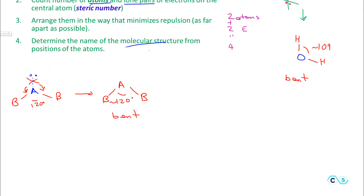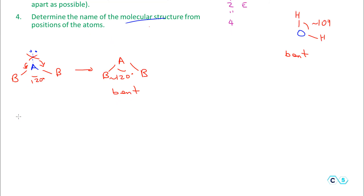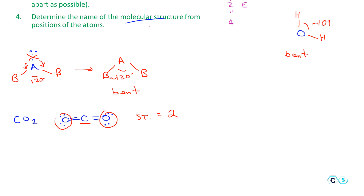Let's look at another example involving a double bond: carbon dioxide, CO2. From the Lewis structure, carbon is in the middle with a double bond to each oxygen, and each oxygen has two lone pairs. Looking at the central carbon, the steric number is two atoms and no lone pairs — steric number equals two. It does not matter whether the bond is single, double, or triple; we count the group, not the bond order. With a steric number of two, the optimal geometry is 180 degrees, making CO2 a linear geometry.